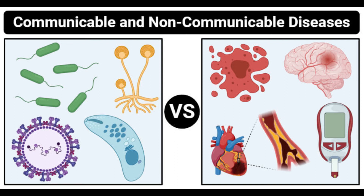Diabetes is a non-communicable chronic condition where the blood glucose level is higher than normal. Type 1 diabetes occurs when the body's immune system destroys healthy cells like the insulin-producing beta cells of the pancreas, mistaking them for foreign invaders. Type 2 diabetes occurs when the body is unable to use the produced insulin effectively, causing an increase in blood glucose levels. Symptoms of diabetes are not apparent and usually appear gradually. Diabetes is mostly seen in older individuals and is associated with unhealthy dietary habits. It may even be hereditary, transferring from one generation to another. There is no cure, but medications are available to control complications.